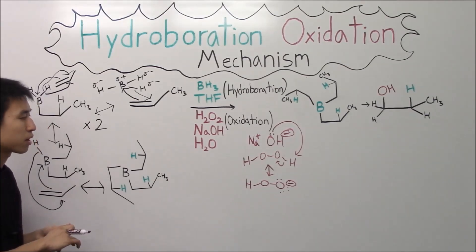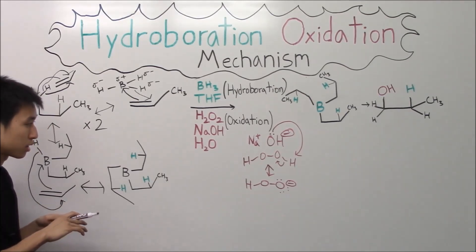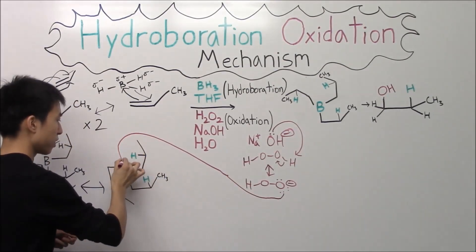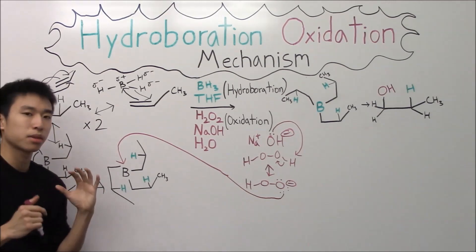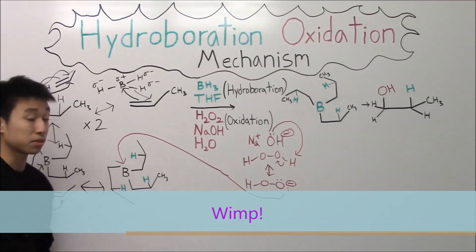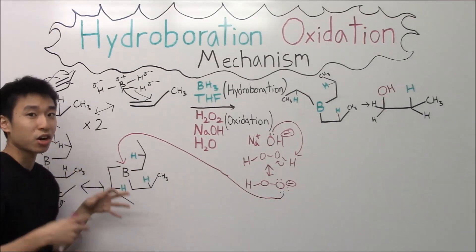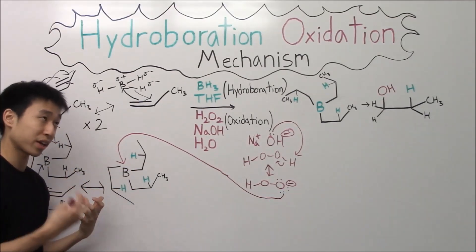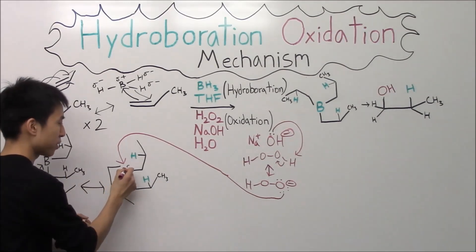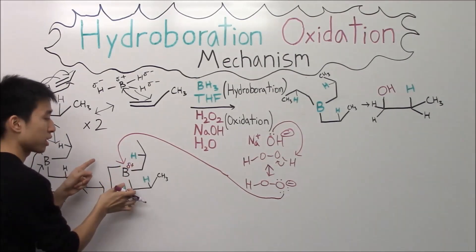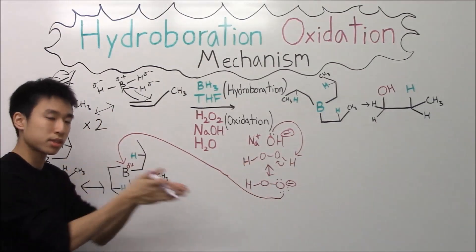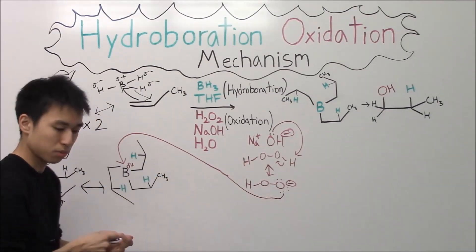So now what this peroxide ion does is that it's actually going to come on over here and attack the boron. In case you're wondering why the boron is being attacked, once again, boron is a wimp. He cannot hold on to his electrons. Even though he's bound to carbon over here, carbon's even more electronegative than boron. There's a partial positive on the boron and almost partial negatives on the three carbons. So it just nucleophilically attacks it, and then we form an intermediate.